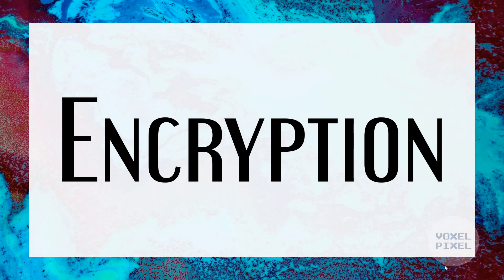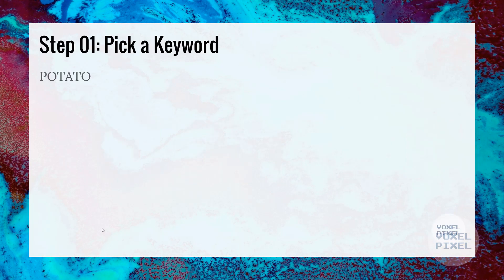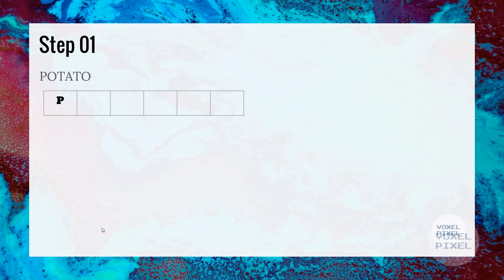Let's look at encryption first. For this tutorial, let's pick a keyword potato. Next we will arrange our keyword's individual characters into columns. Each column will have an individual character of the keyword.